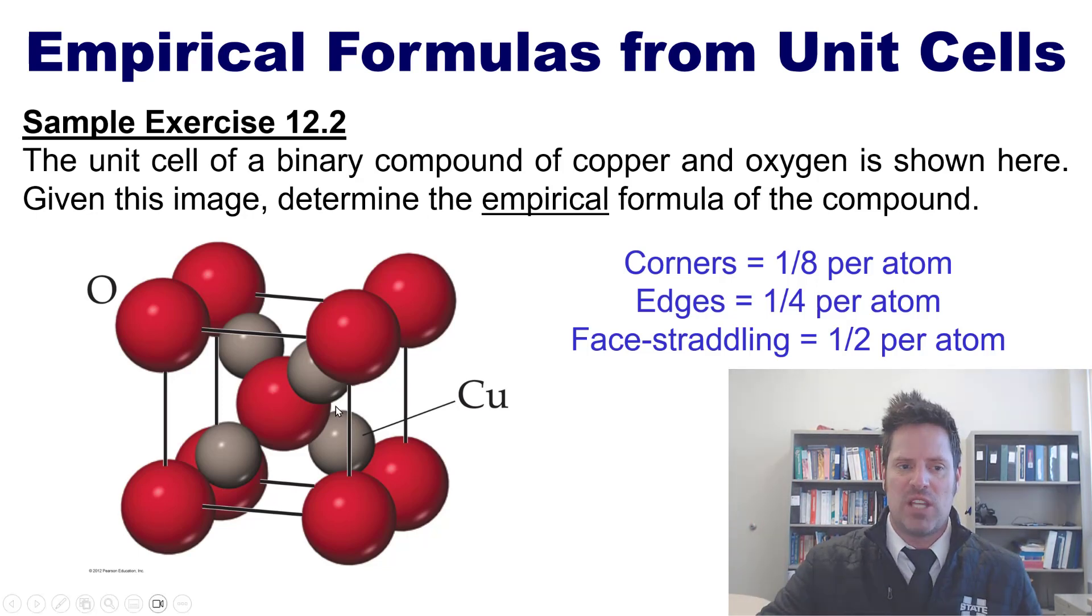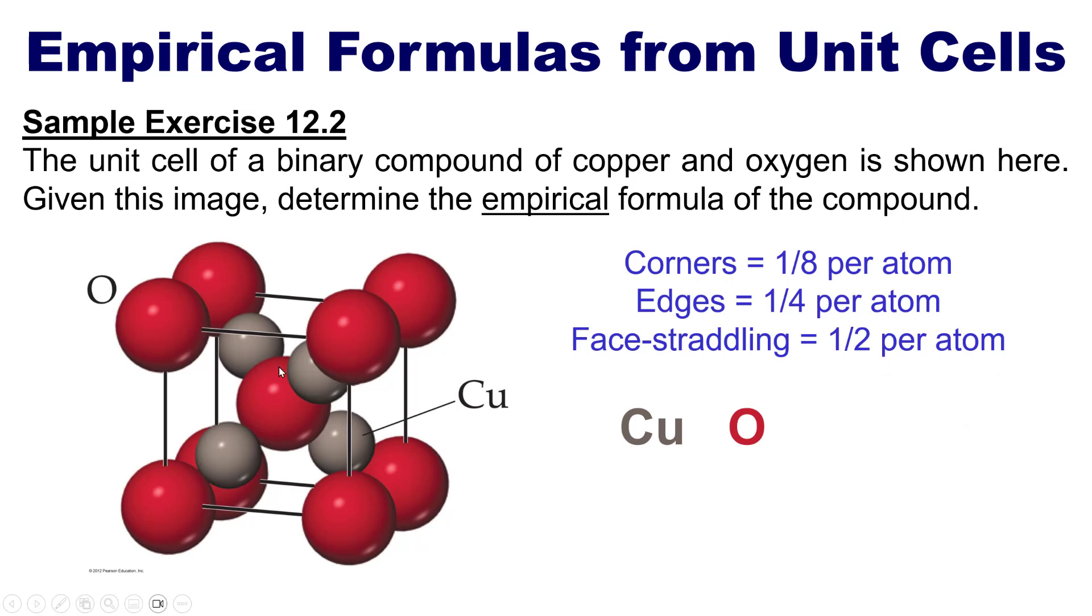In this unit cell, we of course have copper and oxygen. And you can see that the copper atoms are completely inside or encased in the box. Thus, all four of these copper atoms will be counted towards our formula. So I begin with copper 4. Now, the oxygen is a little bit trickier. You can see that there's a central oxygen right here that's completely inside the cube.